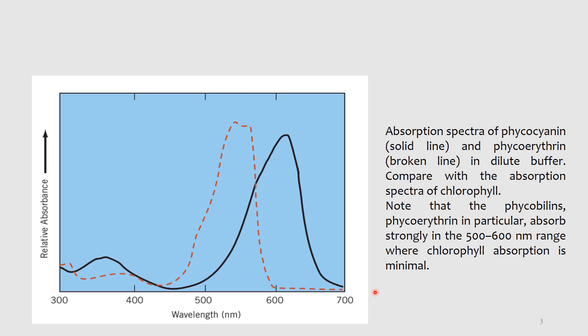Here is the absorption spectra of phycocyanin, shown as the solid line, and phycoerythrin, shown as the broken line, represented in dilute buffer. If you compare this with the chlorophyll spectra, you can note the region where chlorophyll absorbs versus where these phycobiliins absorb, allowing these plants to absorb a maximum spectrum of electromagnetic radiation.